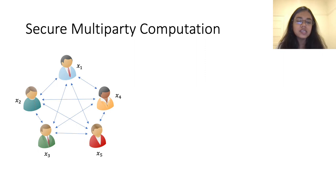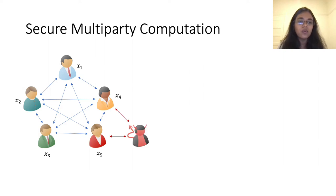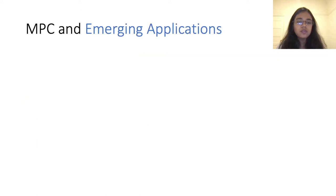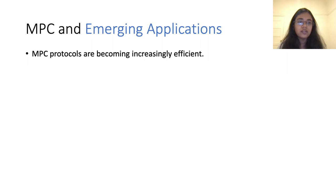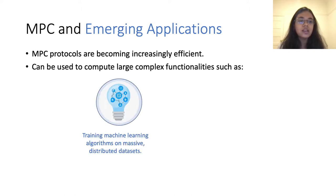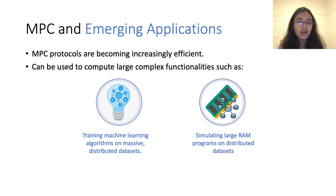To begin with, MPC is an interactive protocol that allows a group of mutually distrusting parties to compute on their private inputs. The security guaranteed by an MPC protocol is that an adversary who corrupts a subset of the parties should not be able to learn anything beyond just the output of the function that the parties were computing. MPC was introduced in the 80s and since then there has been extensive research in trying to bring MPC closer to practice. As the efficiency of MPC increases, the hope is that it can be used to compute large complex functionalities such as training machine learning algorithms or simulating large RAM programs on massive distributed data sets.